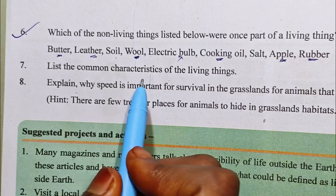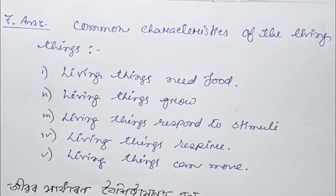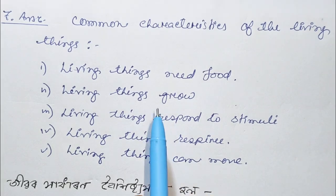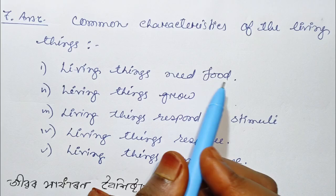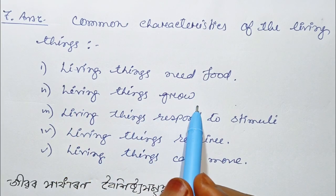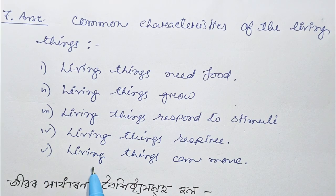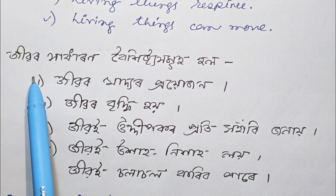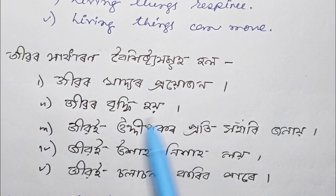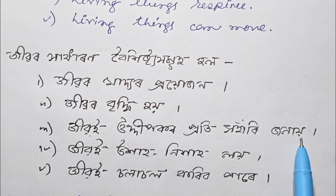Question number 7. List the common characteristics of living things. 1. Living things need food. 2. Living things grow. 3. Living things respond to stimuli. 4. Living things respire. 5. Living things can move. In the local language: living things need food, living things grow, living things respond to stimuli, living things breathe, and living things can move.